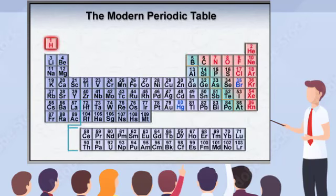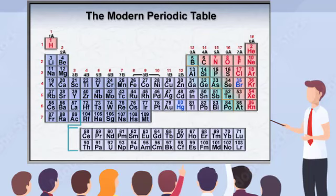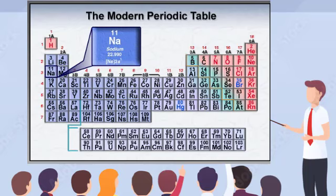The modern periodic table arranges 109 elements by atomic number into 7 horizontal rows and 18 vertical columns. Elements filling some of the gaps up to number 118 have been created in laboratories, but names for most of these elements have not been officially accepted. Each element is identified by a one- or two-letter symbol placed in a box or tag containing information about the element. Some periodic tables also show the element name under the symbol.